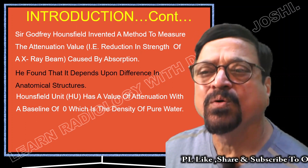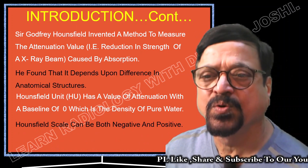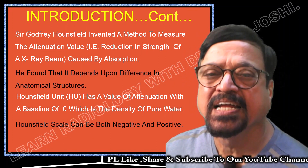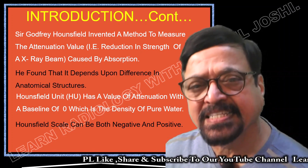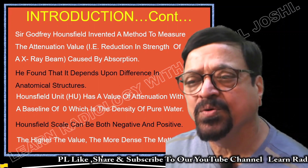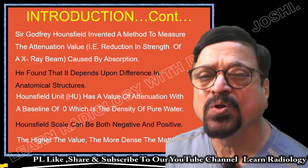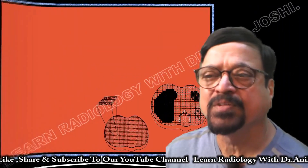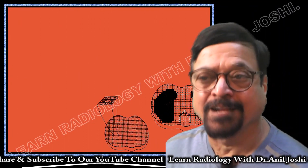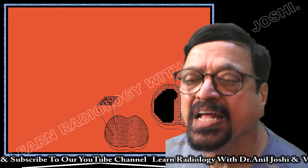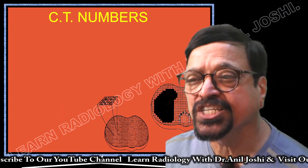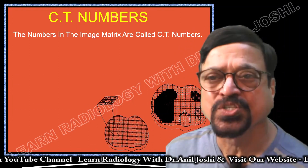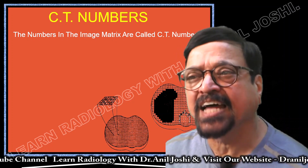The Hounsfield Unit has an attenuation base of zero — zero is taken as water, the density of pure water. The Hounsfield scale can be both negative and positive: it can have plus 1000 and minus 1000. The higher the value, the more dense the matter. A higher positive CT value means it is a dense structure. Negative values are associated with fat and air. For the cross-section image to reveal details, different tissues require different coding.